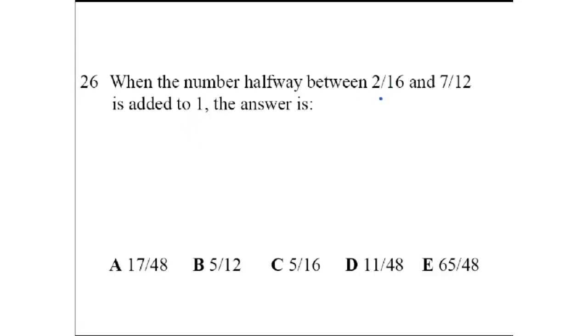First we need to find the number halfway between 2 over 16 and 7 over 12. We need to find a number between two fractions that have different denominators, right? 2 over 16 and 7 over 12. So we first need to find a common denominator.